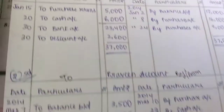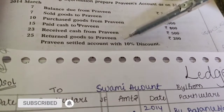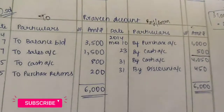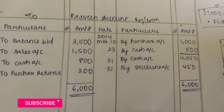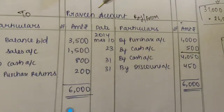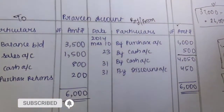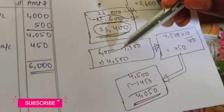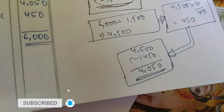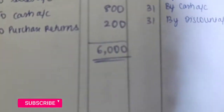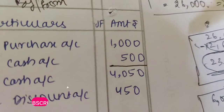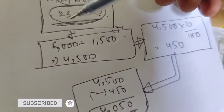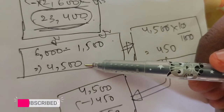Next: Praveen settled account with 10% discount. Many people make a mistake here, so don't do that mistake. First, let us always total both sides. Debit amount total comes to 6,000. Credit side total: 1000 plus 500 equals 1500. So debit minus credit gives us a balance of 4,500.